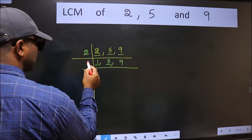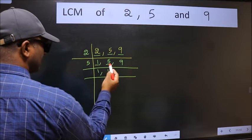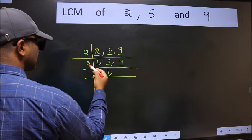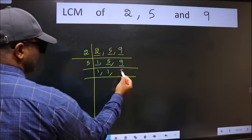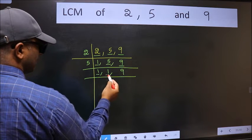5 is a prime number, so 5 divides 5. The other number 9 is not divisible by 5, so you write it down as it is. Now we got 1 here and here.